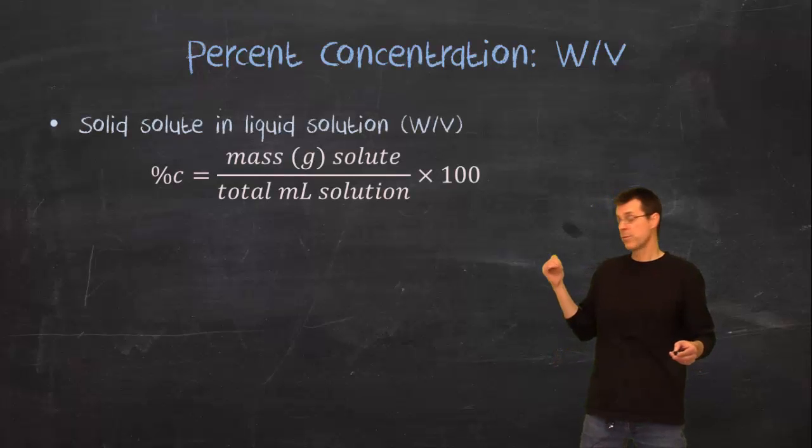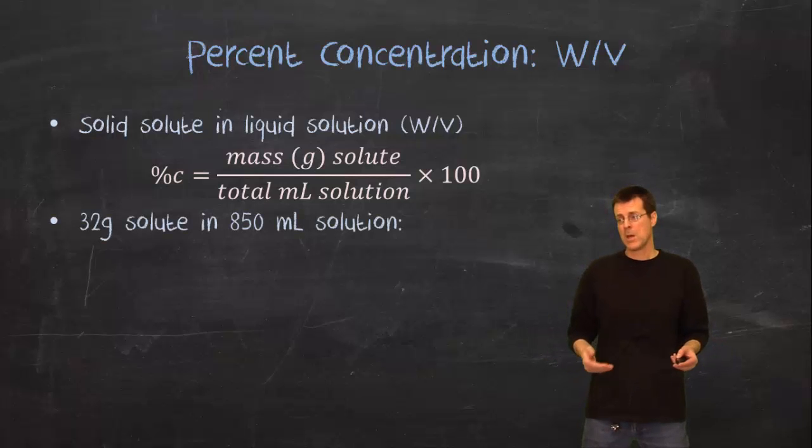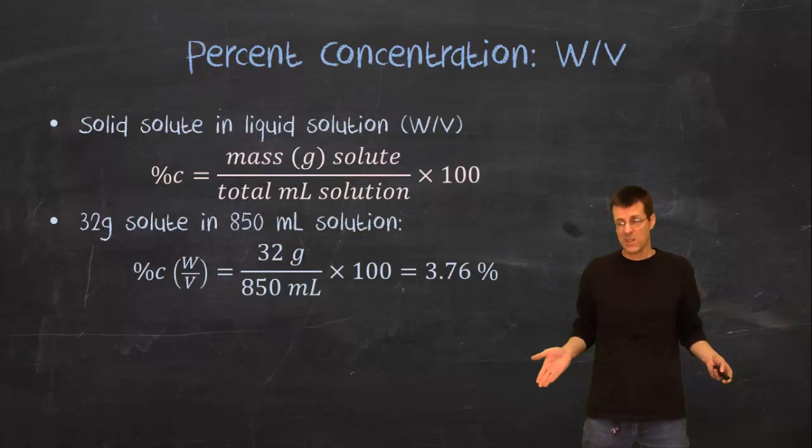We're going to figure it out by taking the mass of solute, the mass will be measured in grams, divided by the total number of milliliters of solution and then we'll multiply that by a hundred. Now if you get a volume that's not in milliliters you will have to convert it to milliliters. So if you had 32 grams of solute in 850 milliliters of solution it's really easy.